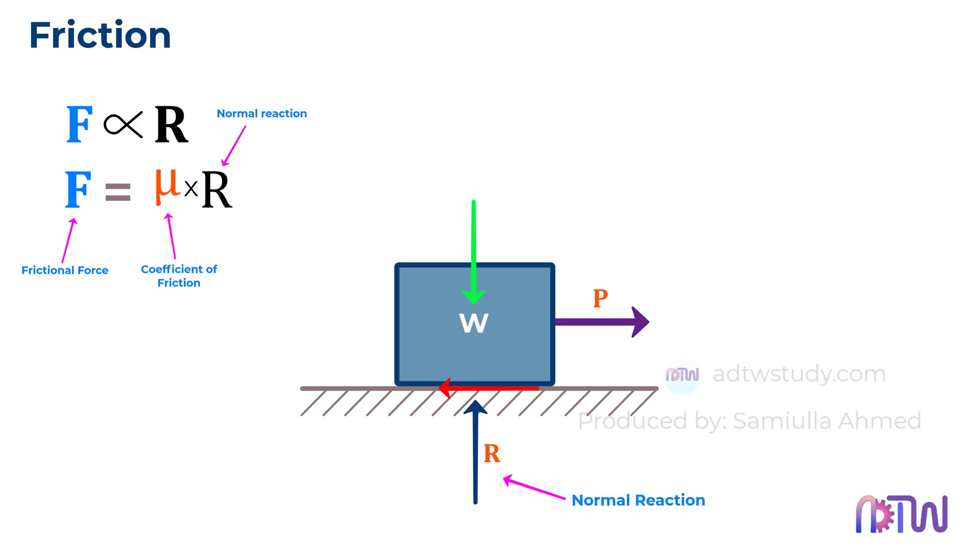Coefficient of friction, mu. The coefficient of friction mu is a value that represents the frictional properties between two surfaces. It is usually provided in the problem.